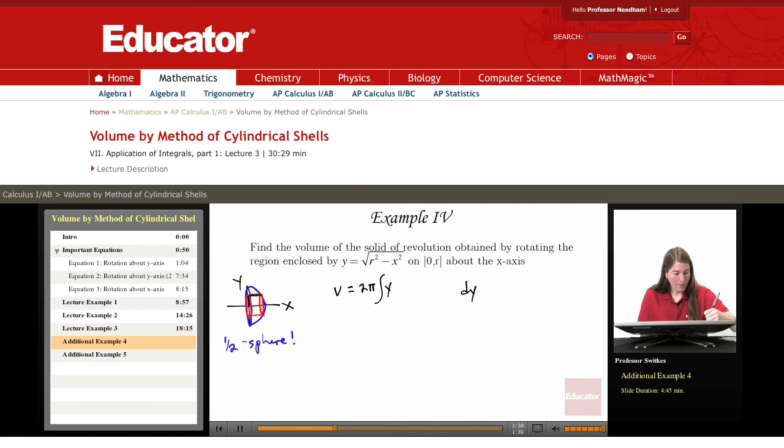Now the length or height, however you want to refer to it, is from the curve, x on the curve minus zero. The curve is given by y equals radical r squared minus x squared. I need to solve for x to find x on the curve.